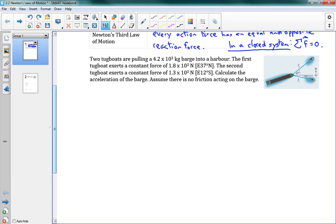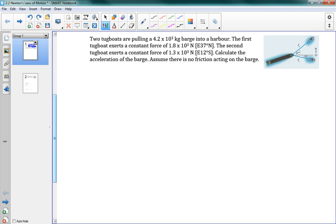So we're going to do a problem using Newton's laws but now talking about it in two dimensions which might be a bit new for you. This problem says that two tugboats are pulling at a 4.2 times 10 to the 3 kilogram barge into a harbor. The first tugboat exerts a constant force, the second tugboat exerts a different constant force. Calculate the acceleration of the barge and assume there is no friction on the barge. So just like our other two dimensional problems we're going to start by drawing our crosshairs. And now I can draw my forces. The first one was 1.8 times 10 to the 3 in this direction, east 37 north.